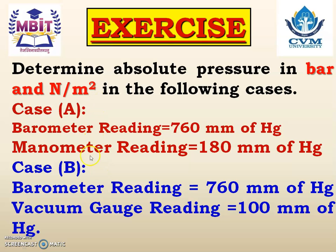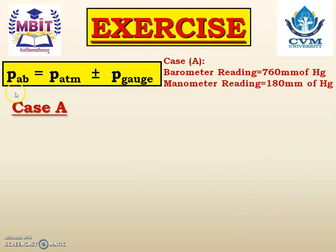Looking at case A and case B, we can overview that case A is the case of positive pressure and case B is the case of negative pressure. Accordingly we have to use the equation of absolute pressure. The equation is: absolute pressure is equal to atmospheric pressure plus or minus gauge pressure.